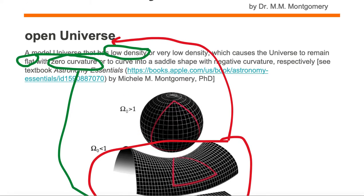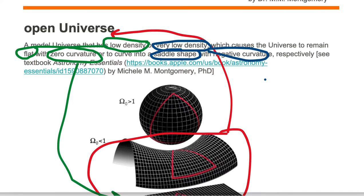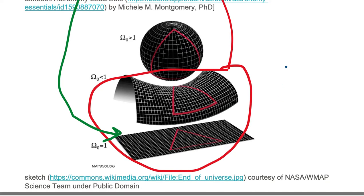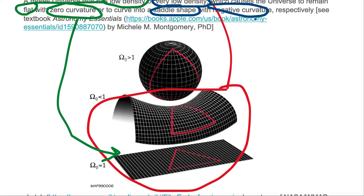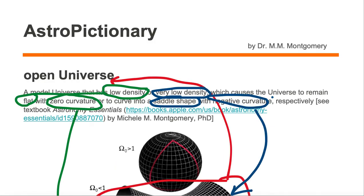Another example of an open universe is one with very low density. A very low density universe has a saddle shape. A saddle shape has negative curvature. The middle example of a universe is one that has a saddle shape and is another example of an open universe.